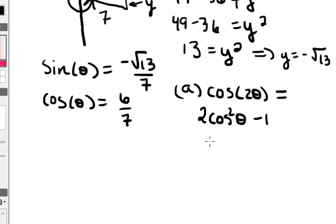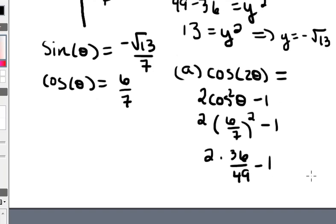Alright, so that means 2 times 6 sevenths squared minus 1, or 2 times 36 over 49 minus 1.